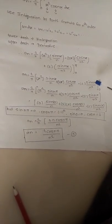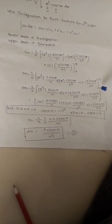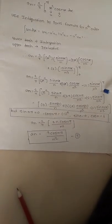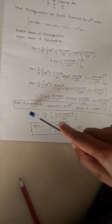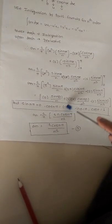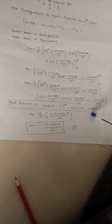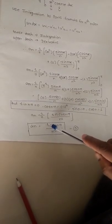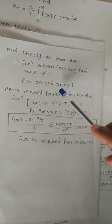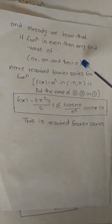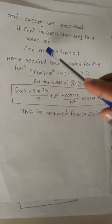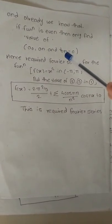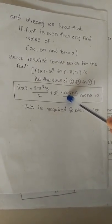After simplifying, we apply the limits — lower limit 0 and upper limit pi. Remember that sin(nπ) equals 0, cos(nπ) equals minus 1 to the power n, sin(0) equals 0, and cos(0) equals 1. Substituting all these values gives the value of a₀ and aₙ. There is no need to find bₙ because the given function is even, and for an even function bₙ is not required. Substituting the values of a₀ and aₙ into the Fourier series equation gives the required final answer.